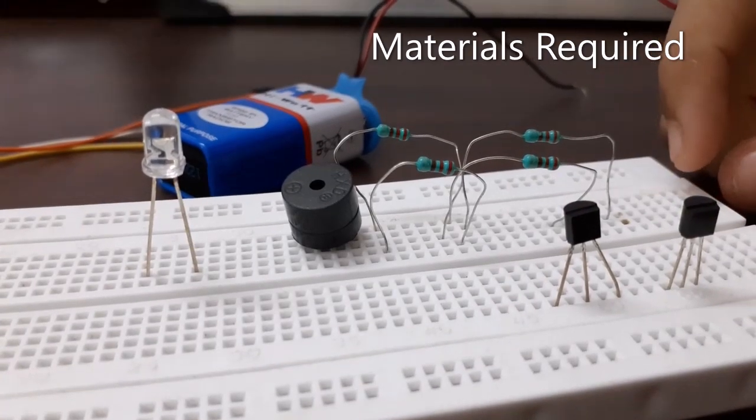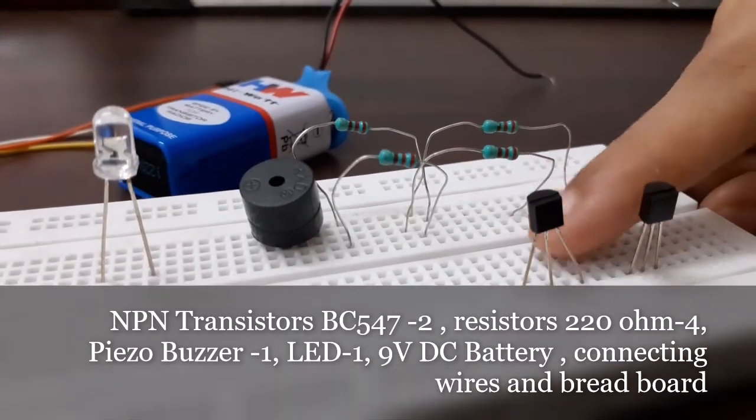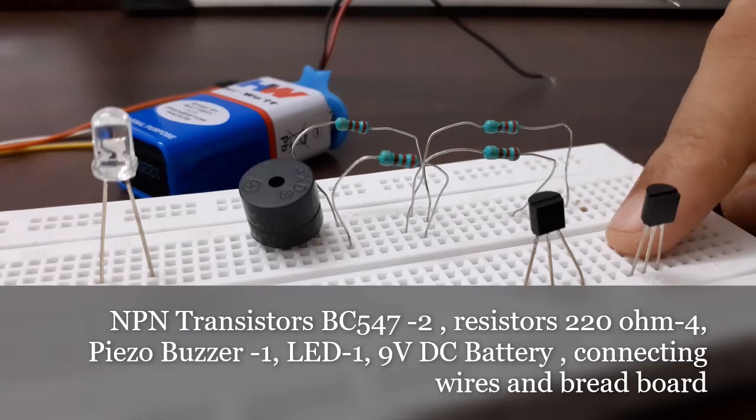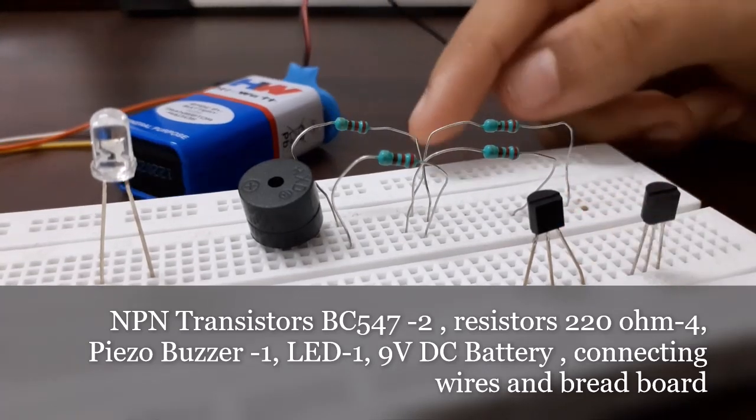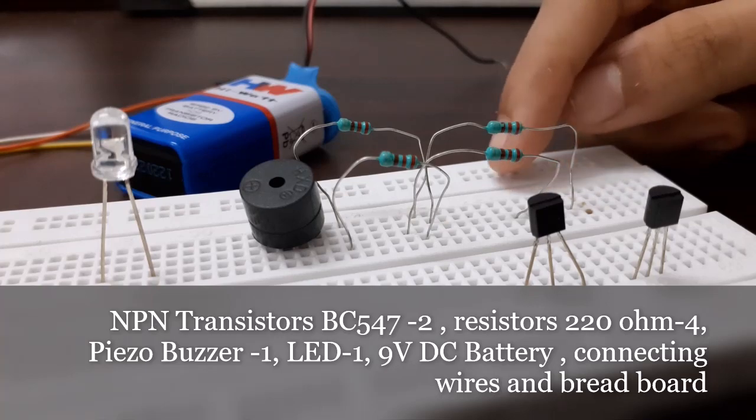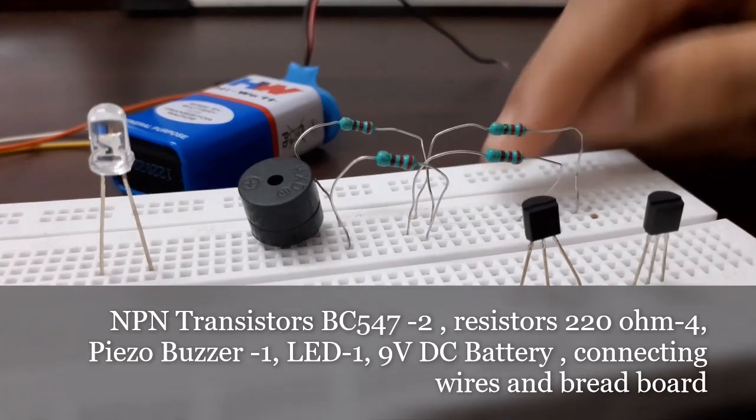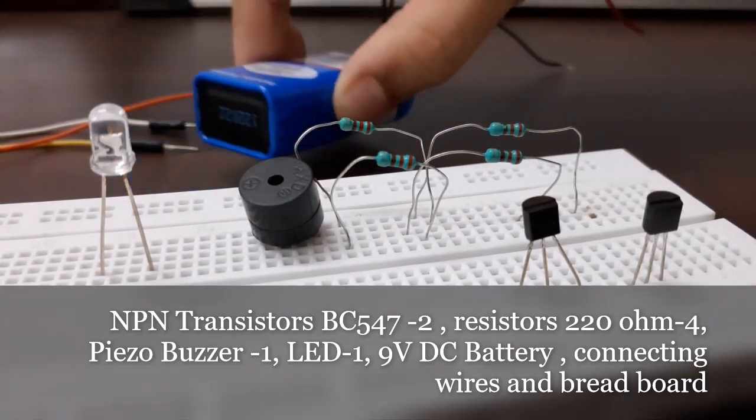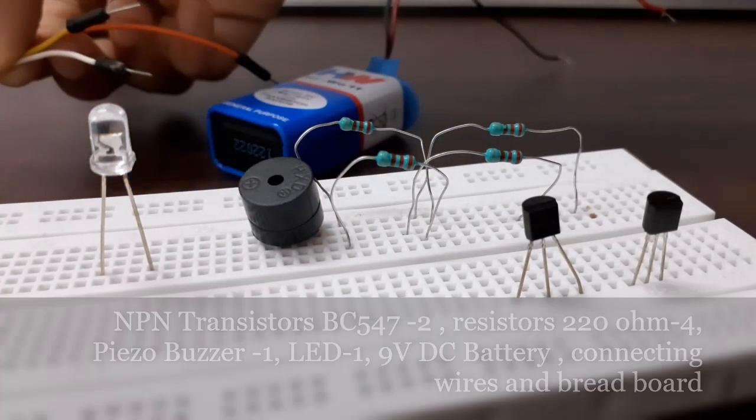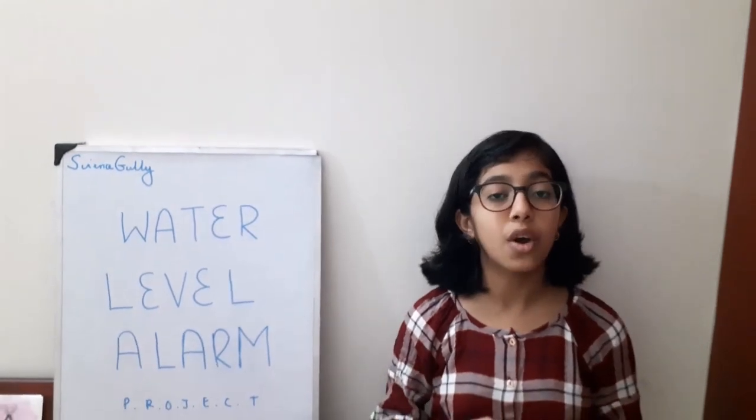We need two NPN transistors. Here I am using BC547, four resistors with the value of 220 ohm, one piezo buzzer, one LED, a battery, and some connecting wire.